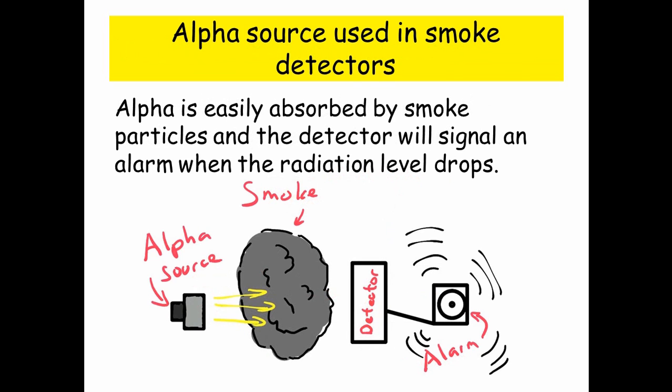Alpha sources are used in smoke detectors. Alpha is easily absorbed by smoke particles, and the detector will signal an alarm when the radiation level drops. Normally when there's no smoke, the alpha source will just go straight through the air to the detector, and the detector is sensing the alpha particles all the time, so it doesn't trigger the alarm.